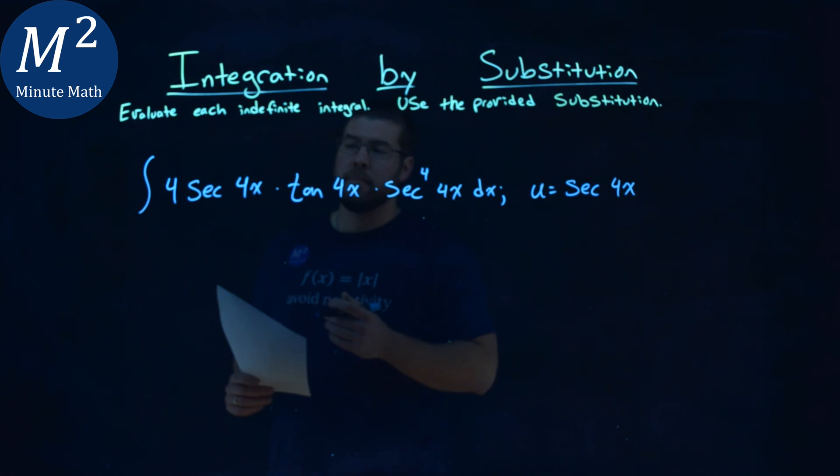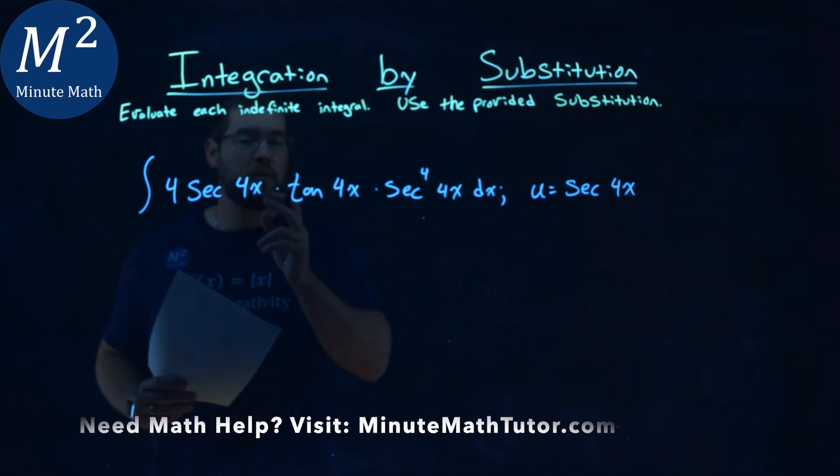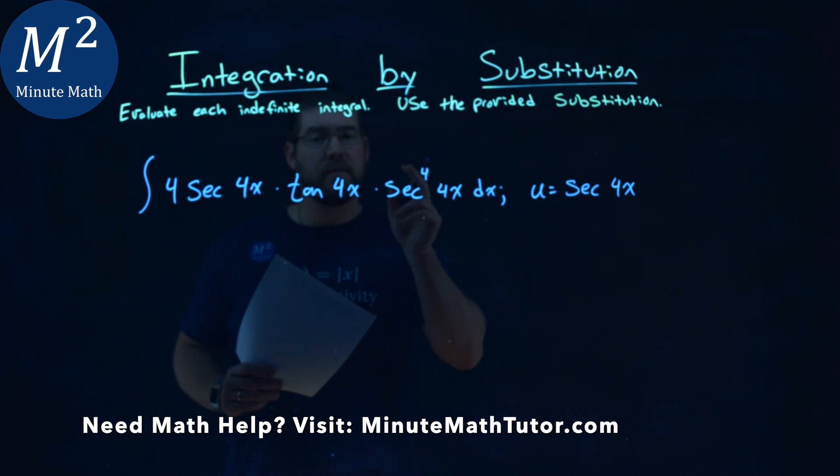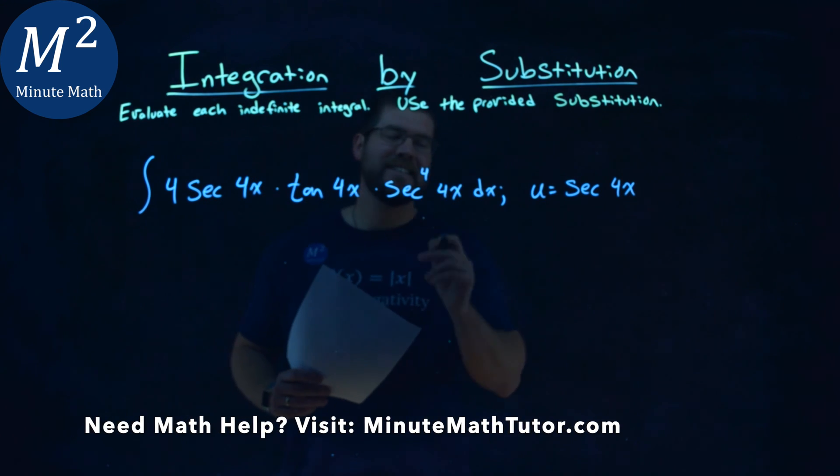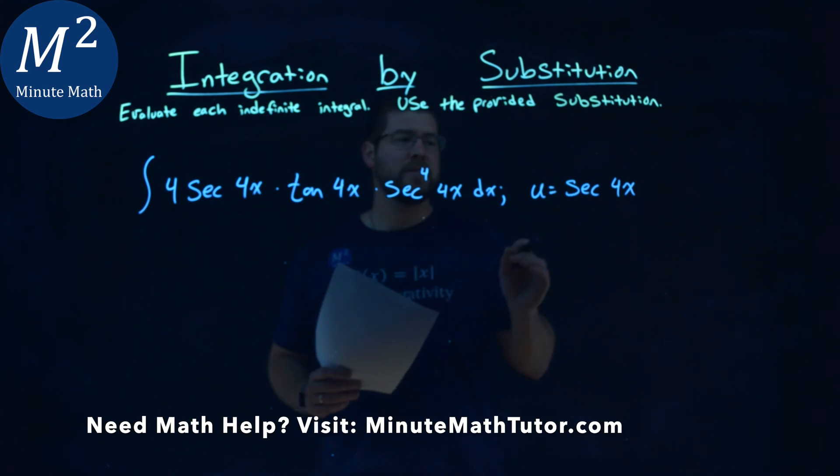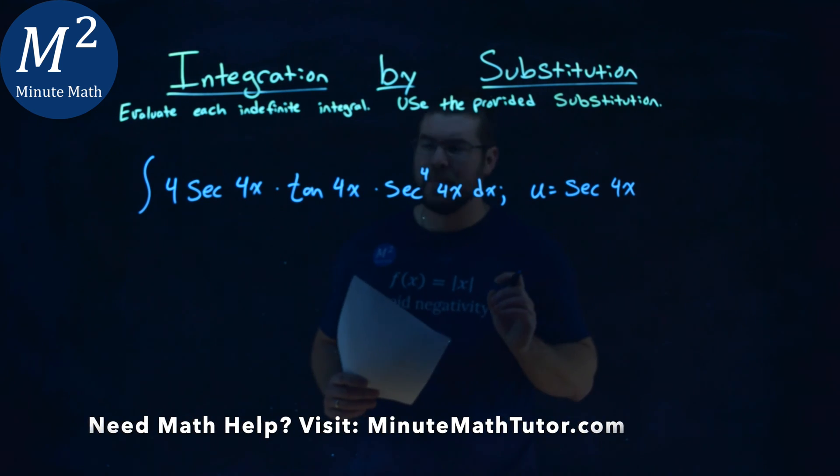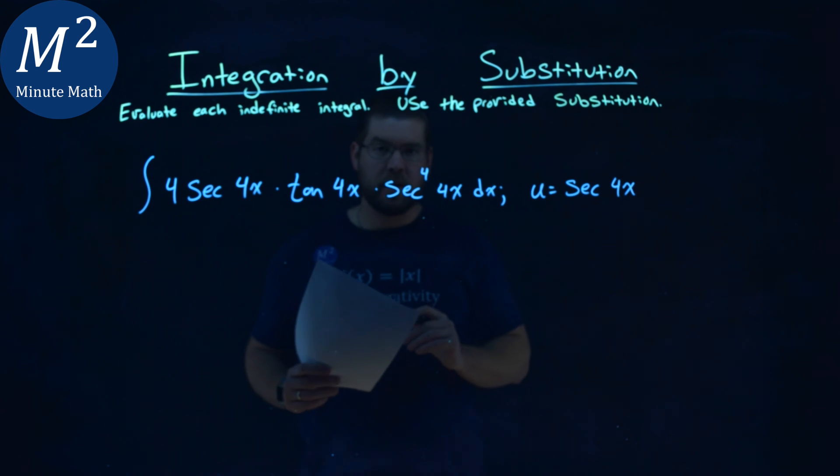We're given this problem: the integral of 4 secant 4x times tangent 4x times secant to the 4th power of 4x, dx. We're given a u value equal to secant of 4x, and we need to evaluate this indefinite integral.